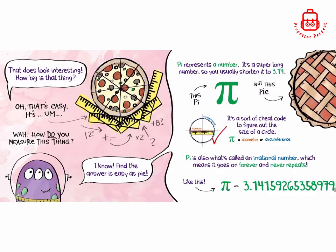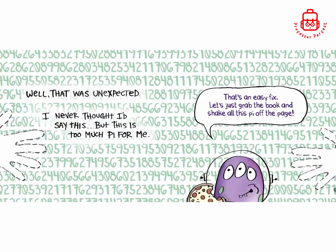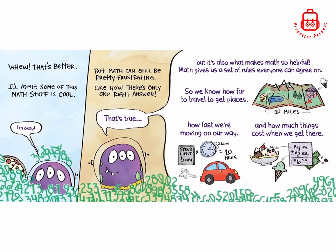That does look interesting. How big is that thing? Oh, that's easy. It's... um, hmm. Wait, how do you measure this thing? I know, and the answer is easy as pi. Pi represents a number. It's a super long number, so you usually shorten it to 3.14. It's a sort of cheat code to figure out the size of a circle. Pi times diameter equals circumference. Pi is also what's called an irrational number, which means it goes on forever and never repeats. Like this.